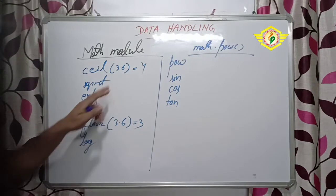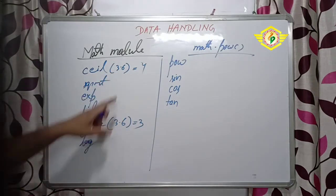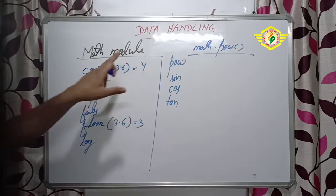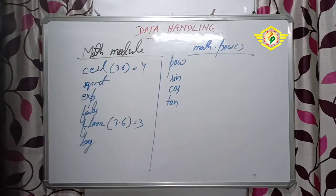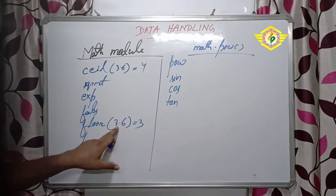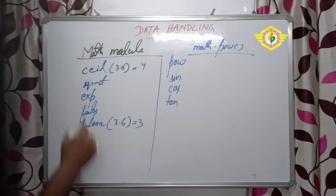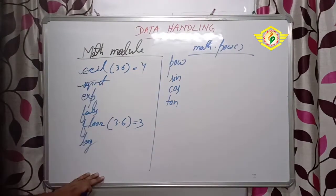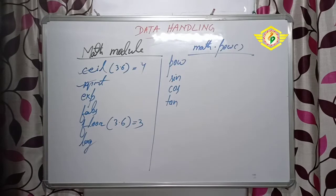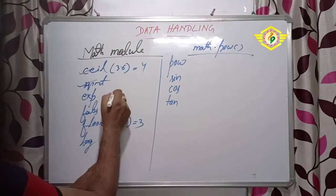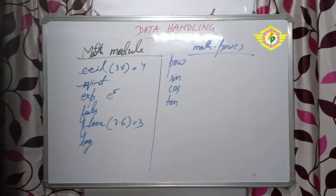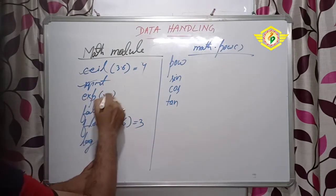We can just use it like this - suppose 4.9, ceil of 4.9 means 5. Suppose 4.1 - that also means 5 for ceil. For floor, 3.0 means 3, 3.9 is also 3. Then SQRT - SQRT means to find the square root of a number. Then next EXP - EXP returns the natural logarithm E raised to any argument power. So E to the power 5, E to the power 2 - accordingly we can use the EXP function.